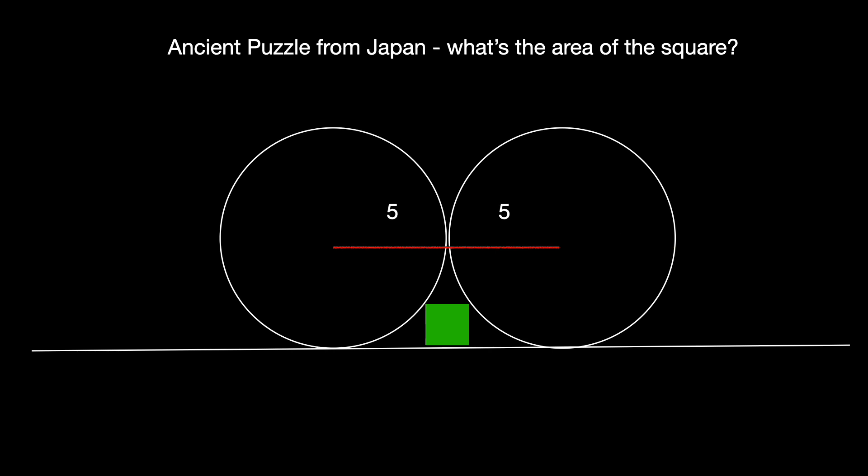Let's first construct three radii on the leftmost circle. The first one will meet the intersection of the two circles, the second one will meet the corner of the green square,